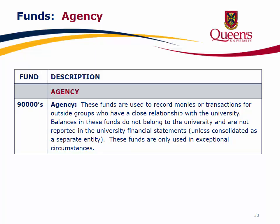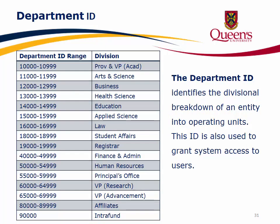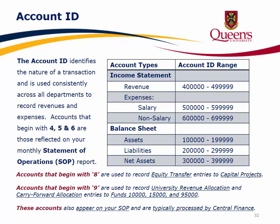These agency funds are only used in exceptional circumstances. The Department ID identifies the divisional breakdown of an entity into operating units and is also used to grant system access to users. The Account ID identifies the nature of a transaction and is used consistently across all departments to record revenues and expenses. Accounts beginning with 4, 5, and 6 are reflected on your monthly statement of operations. Accounts beginning with 8 record equity transfer entries to capital projects, and accounts beginning with 9 record university revenue allocation and carry-forward entries to funds 10,000, 15,000, and 95,000, typically processed by central finance.